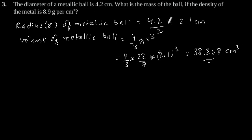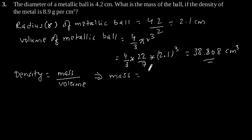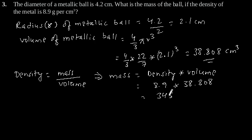Now we need to find out the mass of the ball. Using the formula density equals mass divided by volume, by cross multiplication we can write mass equals density into volume. As given in the question, density is 8.9 and volume is 38.808. By multiplying we will get 345.3912 grams.